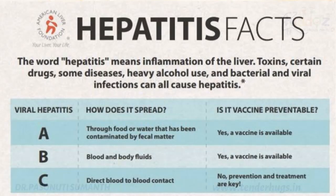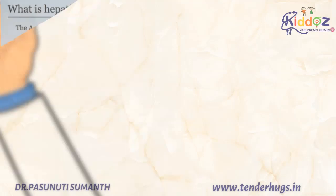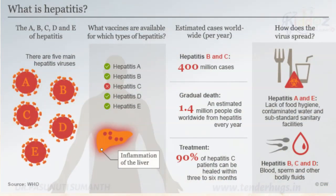The word Hepatitis means inflammation of the liver — essentially an increase in the size of the liver — which is caused by 5 main Hepatitis viruses: A, B, C, D, and E. Presently, vaccination is available for 4 of these types, except Hepatitis C.